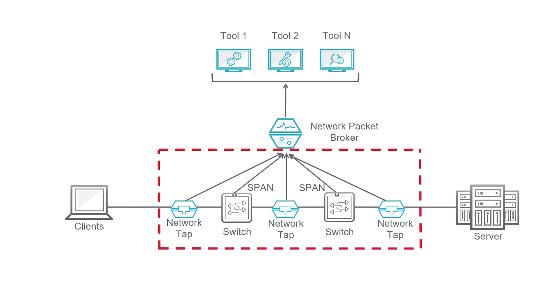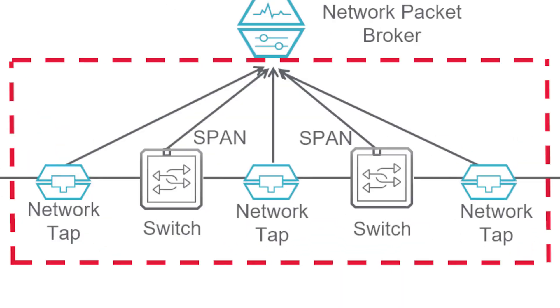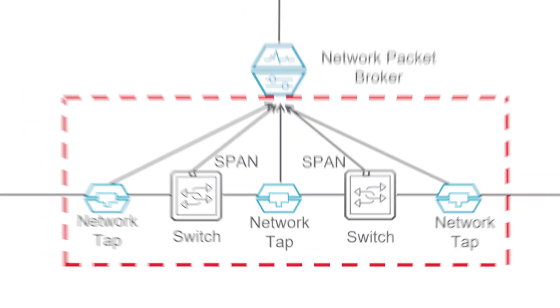Of the two, I always recommend going with taps, because you can place them anywhere in the network you want. Now, while you could just send that data directly to your monitoring tools, too much data will impair their performance. This is where a network packet broker is supremely useful.